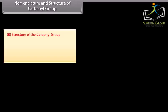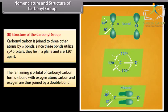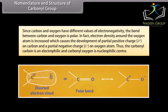Structure of the carbonyl group. The carbonyl carbon is joined to three other atoms by sigma bonds. Since these bonds utilize sp2 orbitals, they lie in a plane and are 120 degrees apart. The remaining p orbital of carbonyl carbon forms a pi bond with the oxygen atom; carbon and oxygen are thus joined by a double bond. Since carbon and oxygen have different values of electronegativity, the bond between them is polar. The electron density around the oxygen atom is increased, which causes the development of a partial positive charge on carbon and a partial negative charge on oxygen. Thus, the carbonyl carbon is an electrophilic center and carbonyl oxygen is a nucleophilic center.